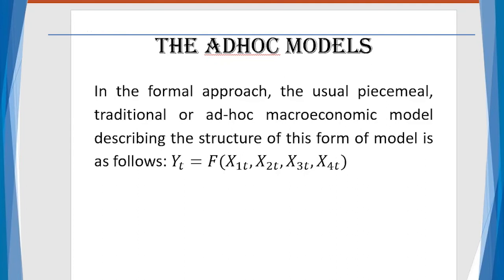The first is called the ad hoc model. In the formal approach, the usual piecemeal traditional macroeconomic models describe structure in a straightforward way — you determine what phenomenon you want to study, set your dependent variable, look for theoretical backing for independent variables, and select variables that can explain the phenomenon. In this case, we have four independent variables.